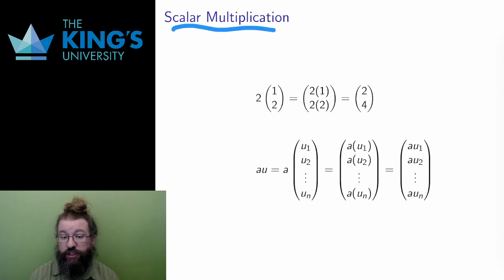Recall that a scalar is just a number. So scalar multiplication is the multiplication of a vector by a number. Take the number 2 and the vector (1,2). Then scalar multiplication is simply multiplying by the scalar with every entry in the vector. 2 times the first entry 1 produces 2, 2 times the second entry 2 produces 4. In scalar multiplication, the scalar is written on the left, and the vector is written on the right.